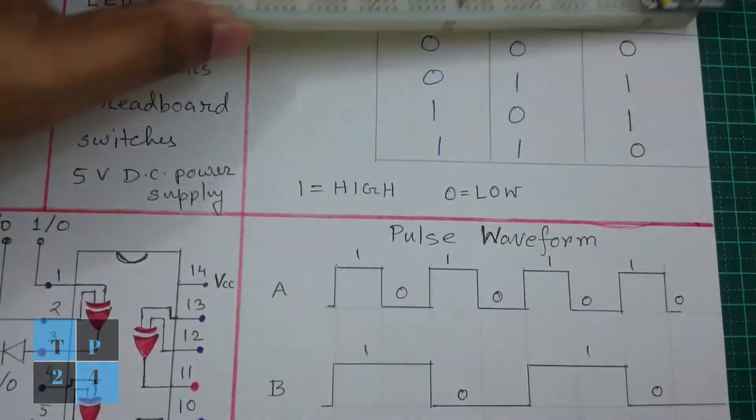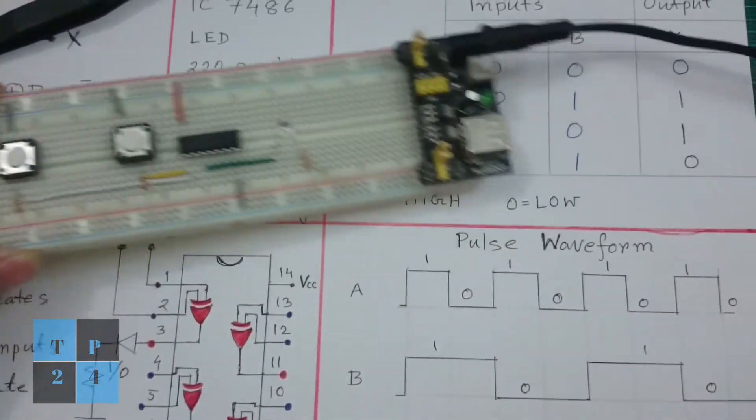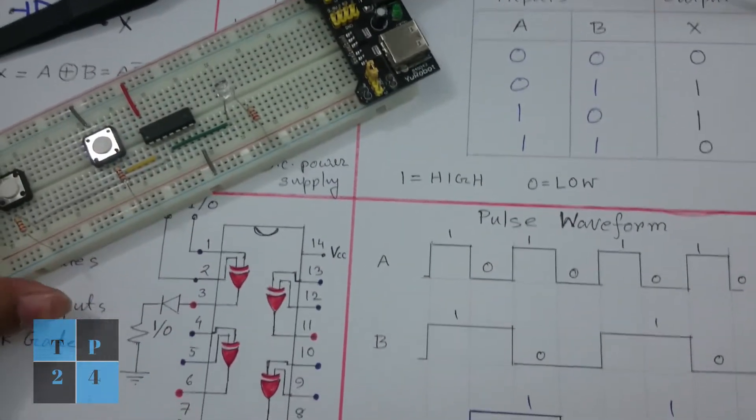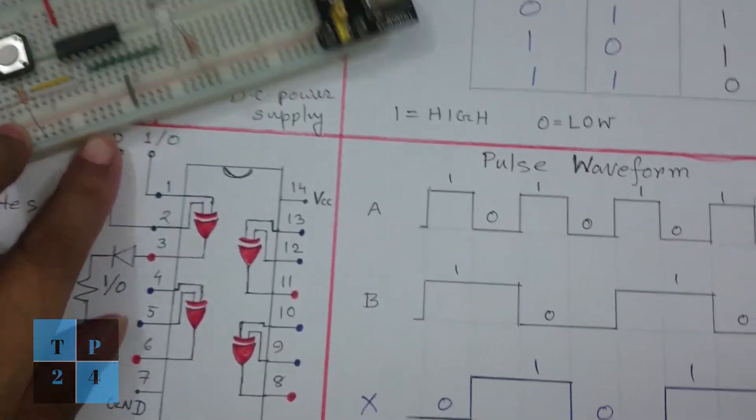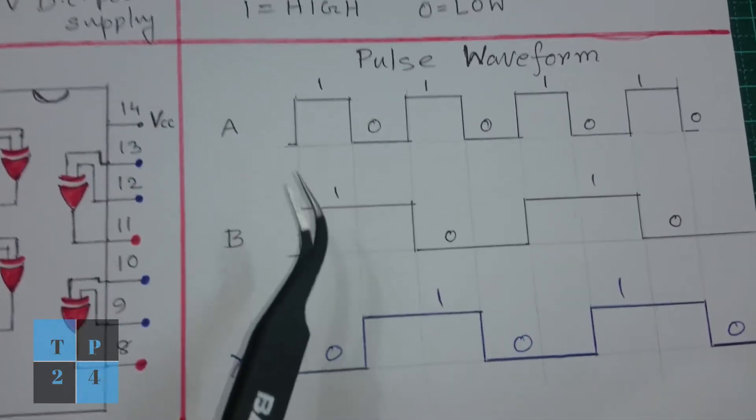If I turn off the switch and show you the pulse waveform, if I supply a waveform of this shape into input A.